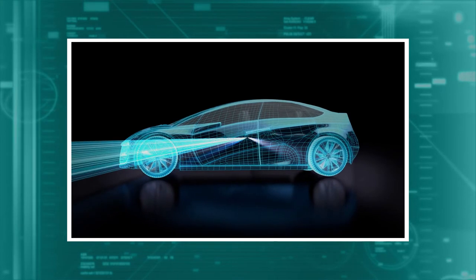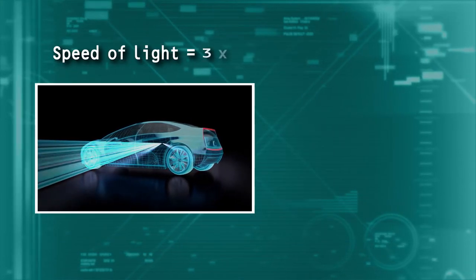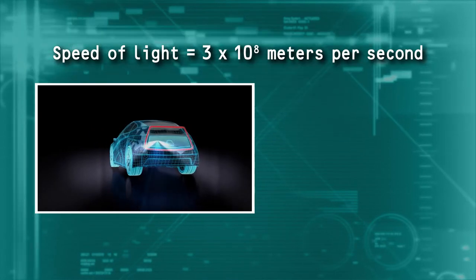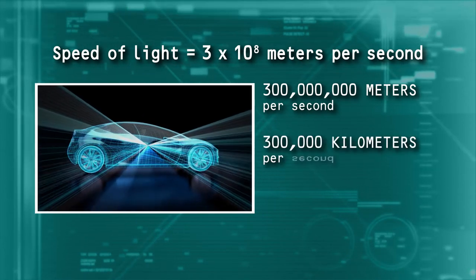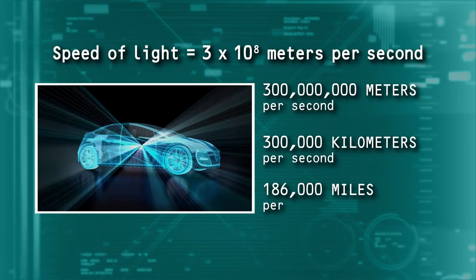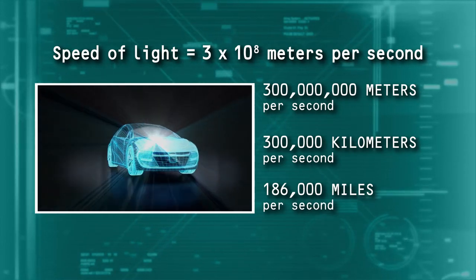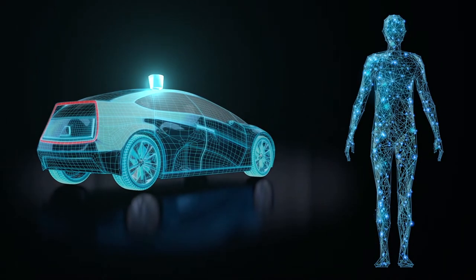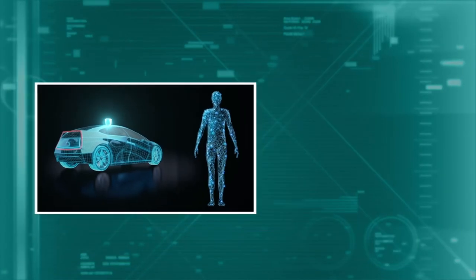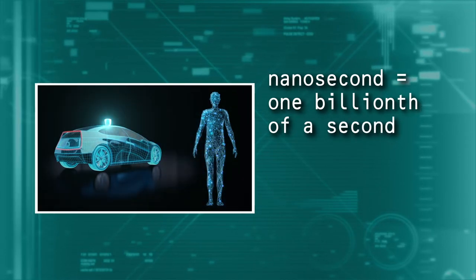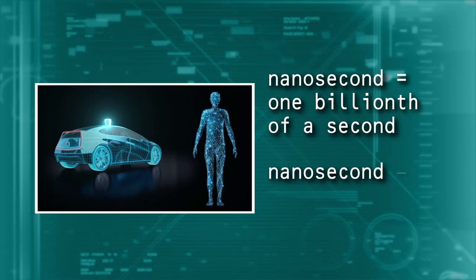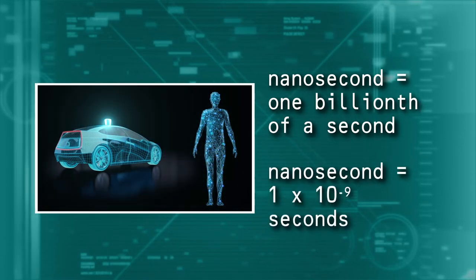LIDAR works by transmitting a pulse of light. Light in air travels 3 times 10 to the 8th meters per second. In other words, it travels 300 million meters every second, or 300,000 kilometers per second, which is the same as 186,000 miles per second. The sensor times how long it takes the light to travel out to an object, then bounce off and return back to the sensor. Since light travels very fast, the time for this trip is very short. In fact, it is usually measured in nanoseconds, billionths of a second. There are 1 billion nanoseconds in a second, or 1 times 10 to the negative 9th seconds per nanosecond.